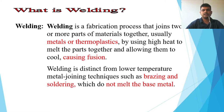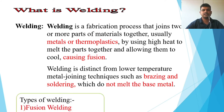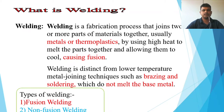Welding can be fusion or non-fusion welding. Welding is distinct from lower temperature metal joining techniques such as brazing and soldering, which do not melt the base metal. Brazing and soldering are also metal joining techniques, but these techniques do not melt the base metal. From this definition, we can say there are two types of welding: fusion welding and non-fusion welding.